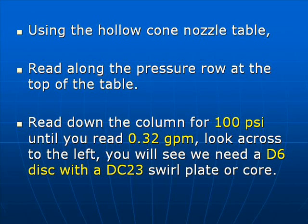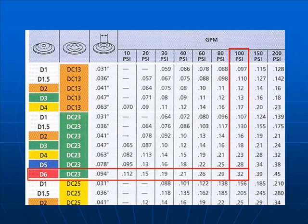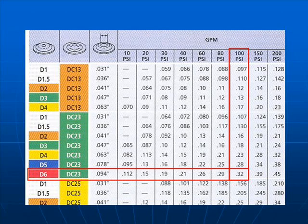Using a hollow cone nozzle table, read along the pressure row at the top of the table. Read down the column for 100 psi until you read 0.32 gallons per minute, then look across to see which disc and swirl plate you require. Here's the chart — look down the column for 100 psi until you see 0.32, shown in the red box. Then look across to the left and you see you need a D6 nozzle tip and a DC23 swirl plate. This will give us 0.32 gallons per minute per nozzle.